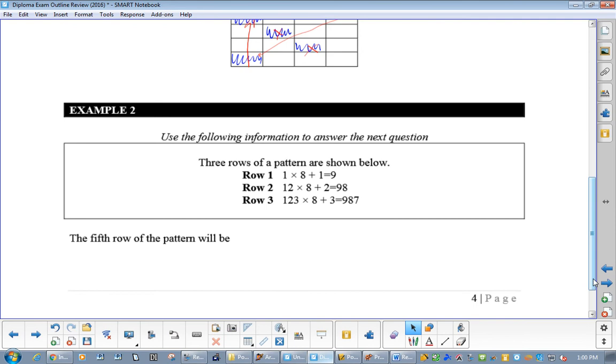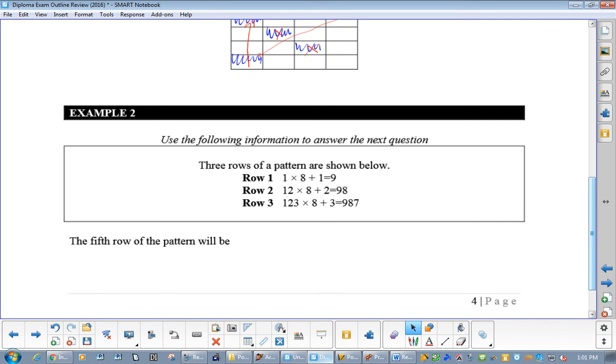Next one. We've got 1 plus 8 plus 1 equals 9. Then 12 times 8 plus 2 equals 98. 123 times 8 plus 3 equals 987. Now, what would row 4 be?